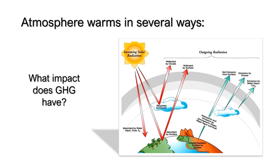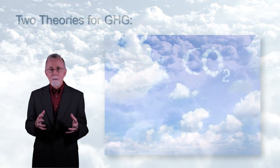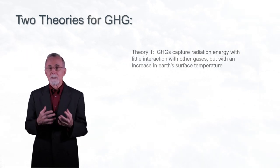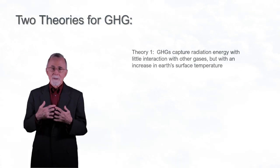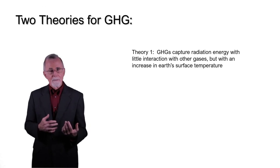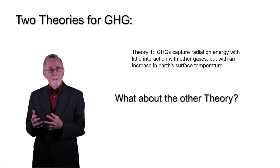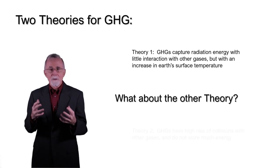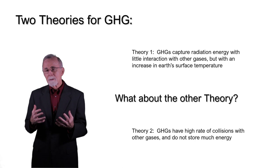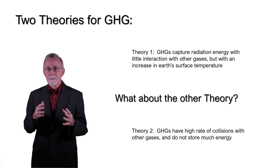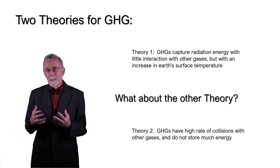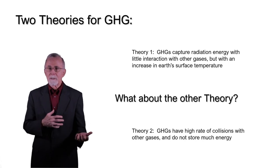So what impact does greenhouse gas have? Two theories for greenhouse gas — a simplified view. Theory number one: greenhouse gases capture radiation energy with little interaction with other gases, but somehow result in an increase in the Earth's surface temperature. Theory number two: greenhouse gases capture the energy but have a high rate of collision with other gases, and do not store much additional energy beyond being a gas in the atmosphere. There are proponents of each case. The resulting question in climate science is therefore critical: which condition dominates? We need to learn more before we can answer this question, and this will be examined more completely in a separate video.